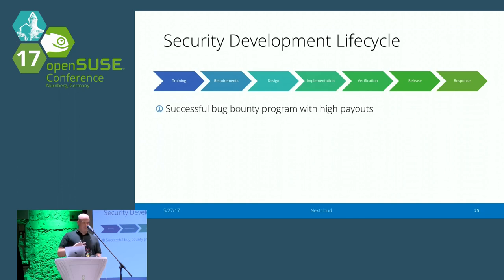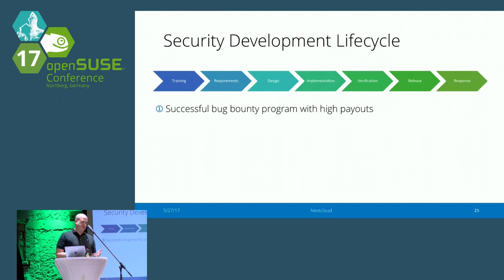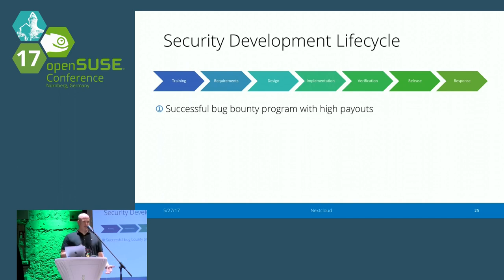Once the software is released, it can still have bugs — and to be honest, it will have security issues. It is really, really hard to write software without security issues. A lot of people think that software with more than a thousand lines of code automatically has security issues. What you need is a system and process to deal with it. Like 10-15 years ago, management would say 'just don't make any bugs.' Nowadays it's understood that this is close to impossible, so what you need is a process to deal with it.